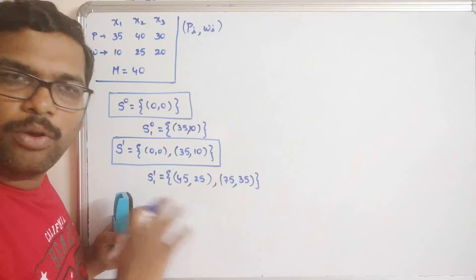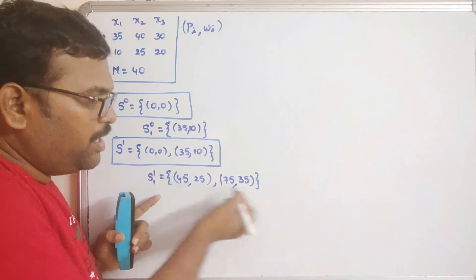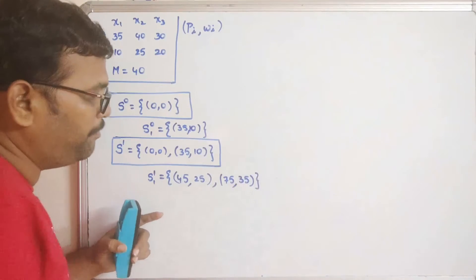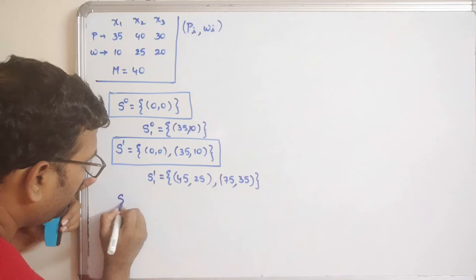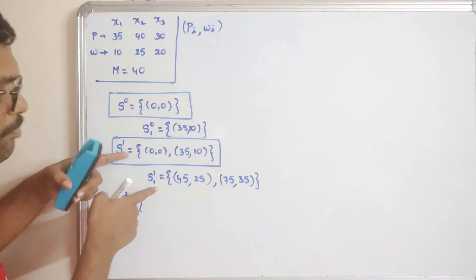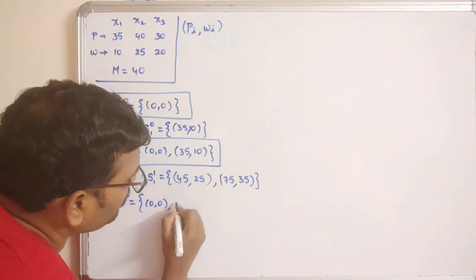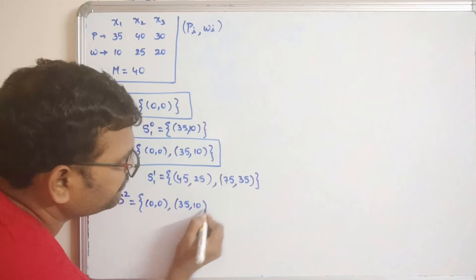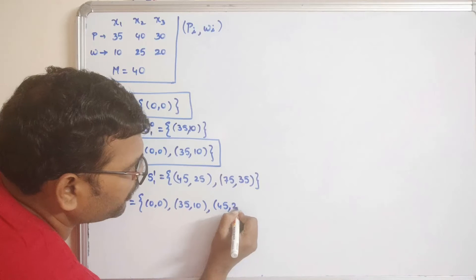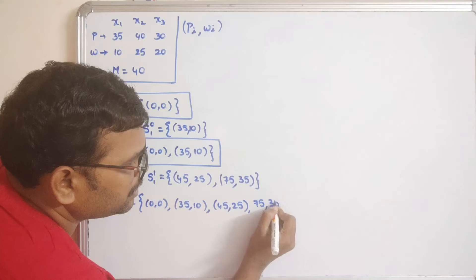There is no dominance here. With weight 25 we get profit 45, and with weight 35 we get profit 75 — profit increases with weight, so no element dominates. S2 = {(0,0), (35,10), (45,25), (75,35)}.